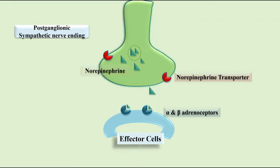However, the norepinephrine transporter pumps the norepinephrine back into the neuronal cells. The norepinephrine in the neuronal cells may re-enter the vesicle or undergo metabolism. All such drugs that directly act on receptors are called direct acting.